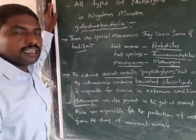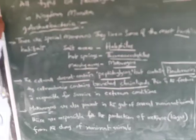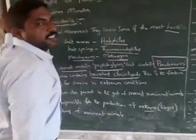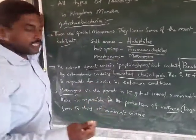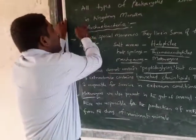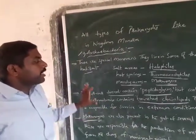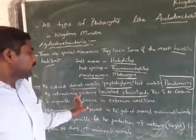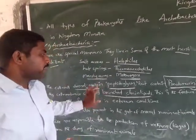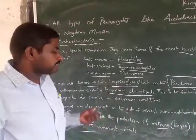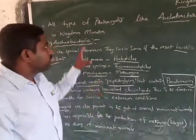Next, methanogens, which also come under archaebacteria. Methanogens are present in the gut of several ruminant animals like goat, sheep, cow, and buffaloes. They are responsible for the production of biogas — methane gas consisting of hydrogen sulfide and methane — produced from the dung of ruminant animals.